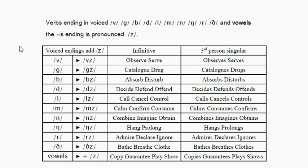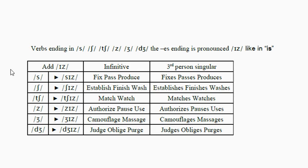So this is a big group that a lot of students need to work on in general. And the last group are called the sibilants. These have the S, SH sound, and the CH, Z sound, and J — which is like in Jonathan. And those all end with an IS sound.